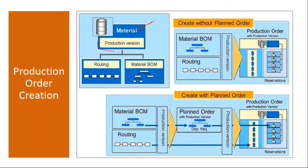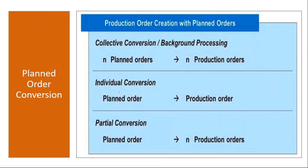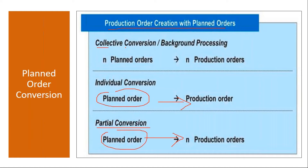When creating a production order with planned orders, there are three methods: full conversion — converting the entire planned order to a production order; partial conversion — taking a planned order and doing a partial conversion; and collective conversion — taking multiple planned orders and converting them into multiple production orders at once, like mass processing, instead of converting each planned order one by one.